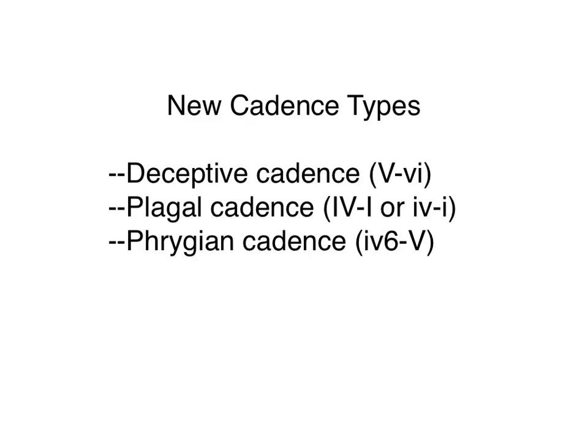Today's topic is new cadence types. We have three types to show you. None of them are as important as the authentic or half cadences we've studied so far, but each may crop up. We have a deceptive cadence, where five goes to six; a plagal cadence, where four goes to one instead of five to one at the end of a phrase; or a Phrygian cadence, which is a kind of half cadence where four-six goes to five.